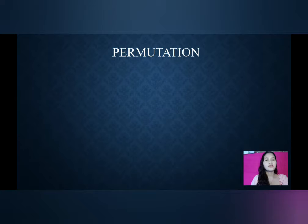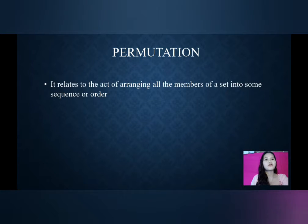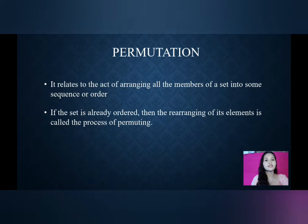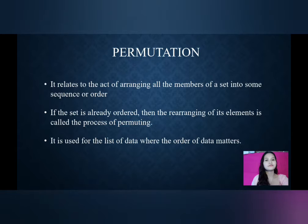Now, let's discuss about permutation. Permutation relates to the act of arranging all the members of a set into some sequence or order. If the set is already ordered, then the rearranging of its elements is called the process of permuting. It is used for the list of data where the order of data matters.